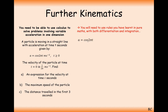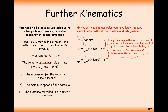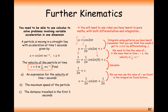Since acceleration equals cos 2πt and we need an expression for velocity, we integrate acceleration to get velocity. The integral of cos 2πt is 1 over 2π times sine 2πt plus c — we always need the plus c for indefinite integration. Plugging in t equals zero and v equals 1 over 2π: sine of zero is zero, so that cancels out, giving c equals 1 over 2π. Therefore, velocity equals 1 over 2π sine 2πt plus 1 over 2π.